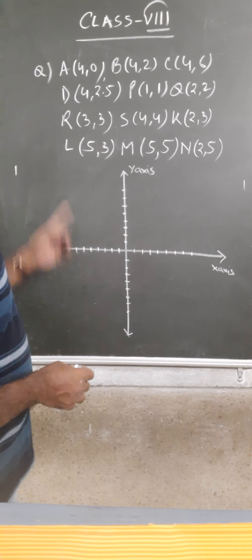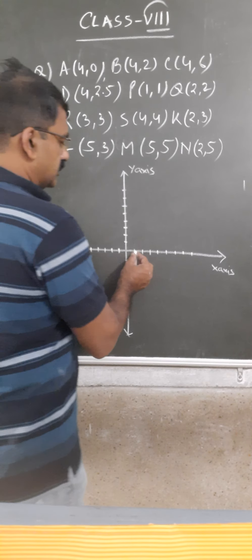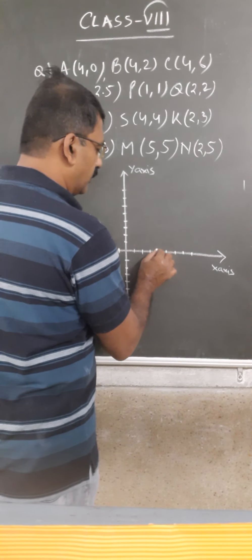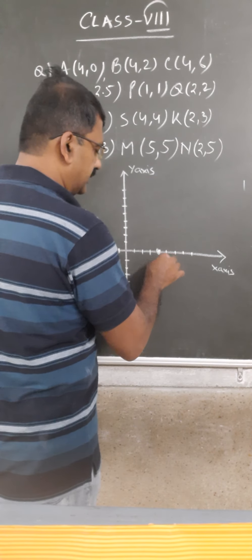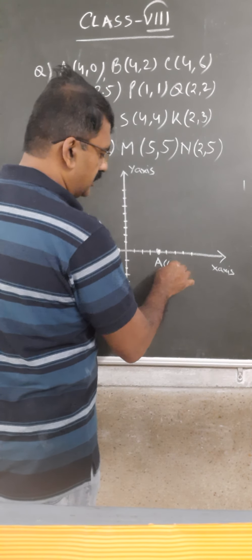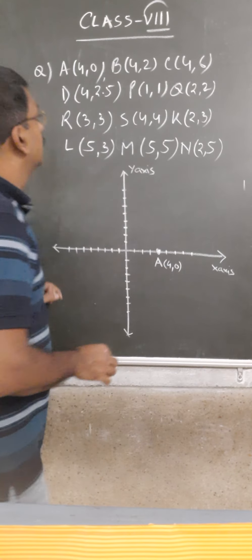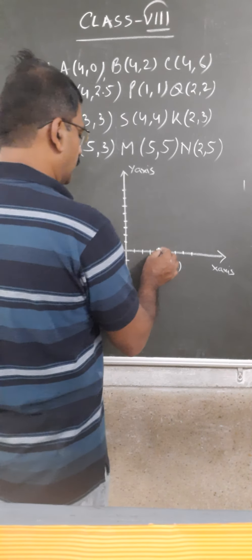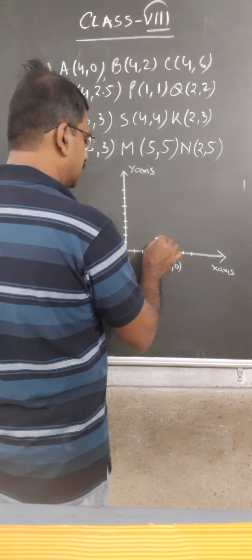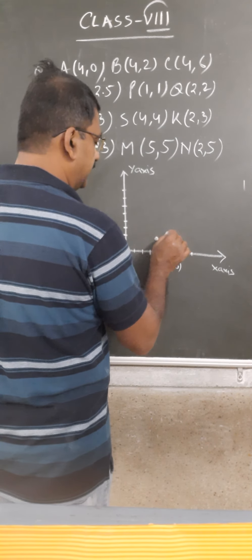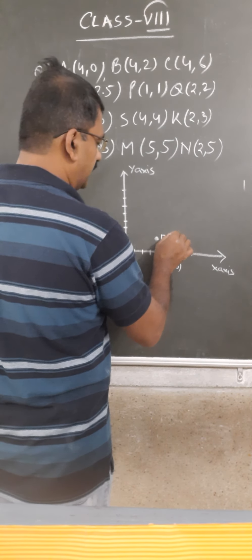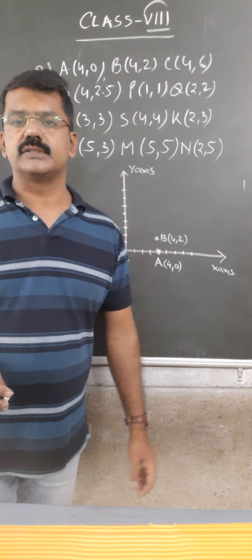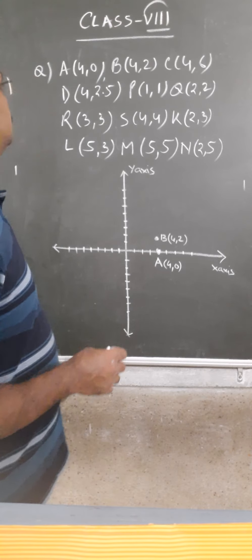The first point is A, which is (4, 0). So we go to 4 on the x-axis and 0 on the y-axis — this point is A at (4, 0). Next, point B is (4, 2). So at x equals 4 and y equals 2, this point is B at (4, 2).